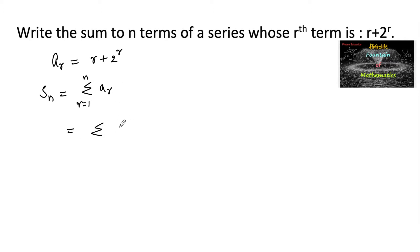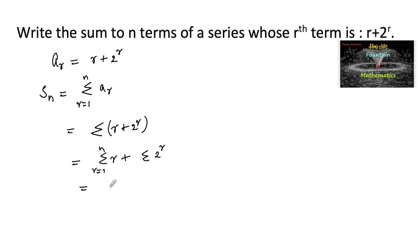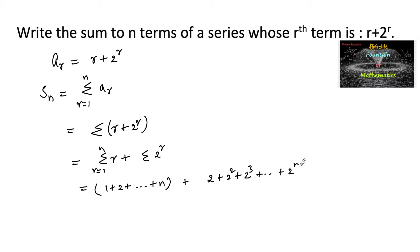We can write summation of ar, that is r plus 2 to the power r, as summation r plus summation 2 to the power r. Summation r from r=1 to n is the sum of first n natural numbers: 1 plus 2 plus and so on to n. And summation 2 to the power r gives 2^1 plus 2^2 plus 2^3 and so on up to 2 to the power n.